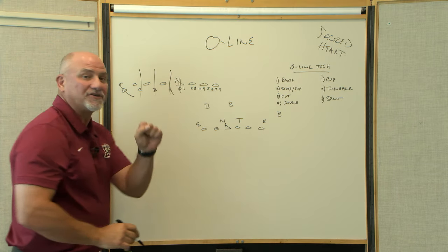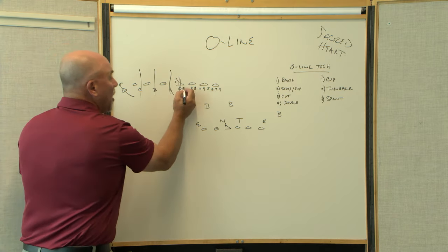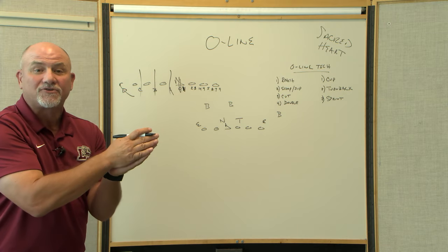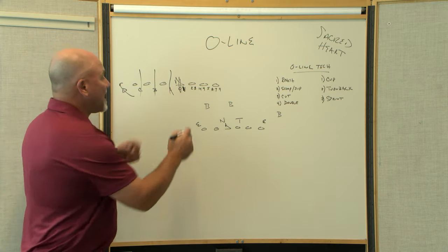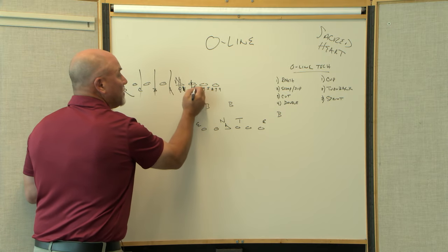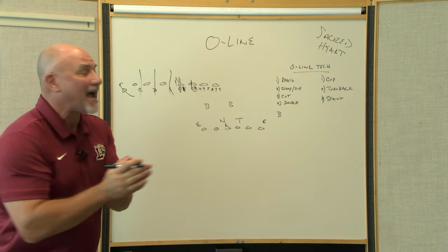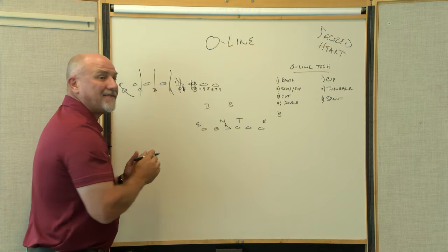Positioning: head up on the center is a zero technique. A one or a shade would be a nose guard shaded to either side. So you have a zero and a one. Head up would be a two. I always talk about three technique tackles—that would be an outside leverage on the guard.